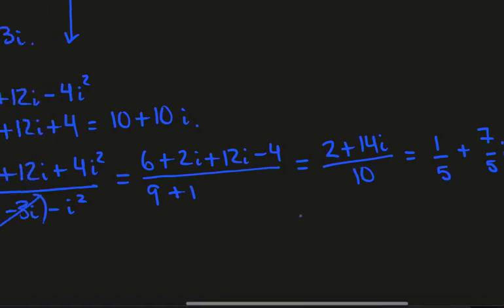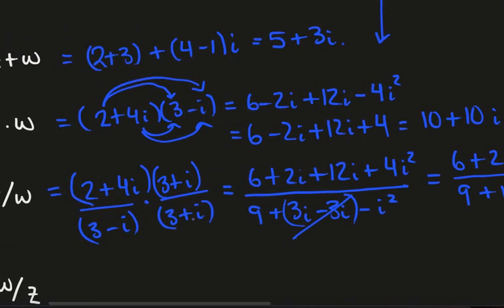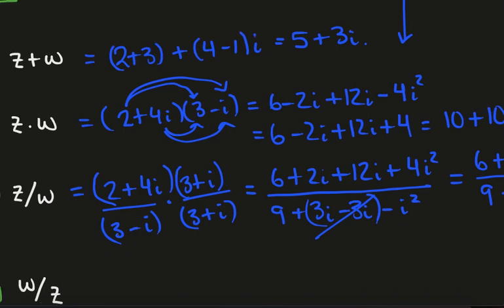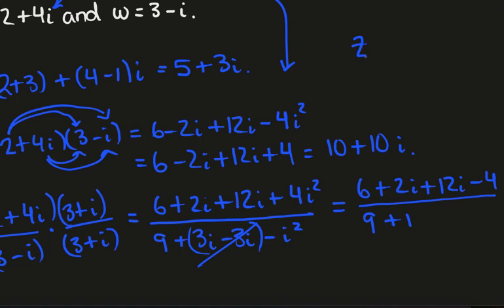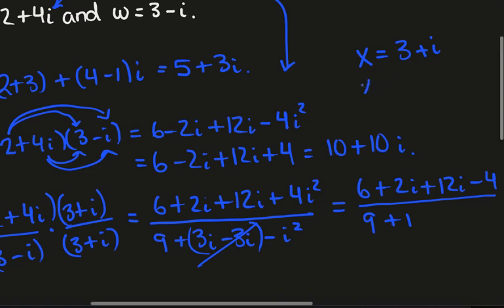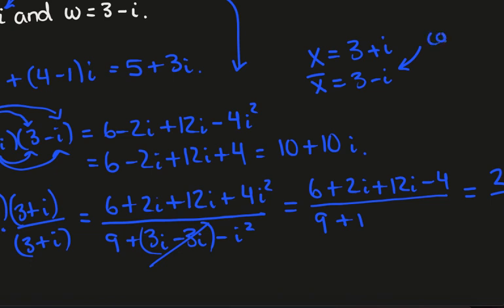To remind ourselves: if we want to get rid of the imaginary part of the denominator and make it real, we multiply by the conjugate. If x equals 3 plus i, then the conjugate x-bar is 3 minus i — we just put a minus in front of the imaginary part. This is called the conjugate, sometimes the complex conjugate.